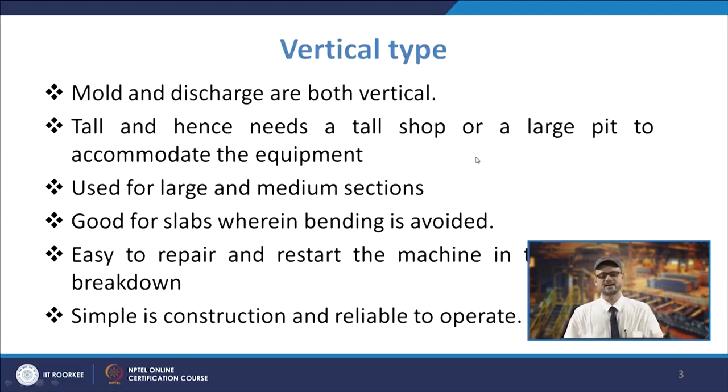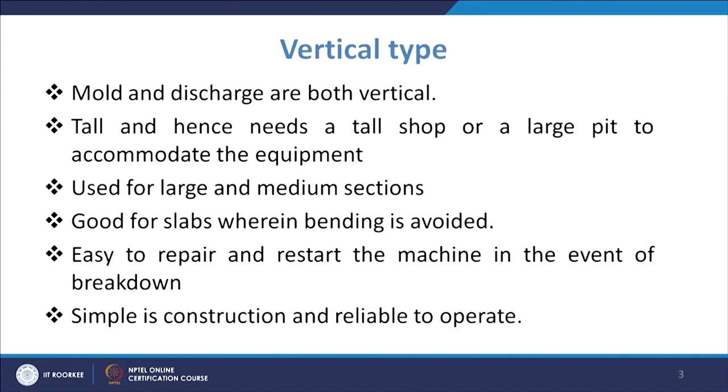An important aspect of the vertical type is that you have to start this work at a height, and since the product is coming in the vertical direction, you need a vertical space — the height will be too high. That is why you need a tall kind of machine and a tall shop or a large pit to accommodate the equipment. You need the tundish at a higher level and the mould at a higher level, and then it comes down to ensure solidification.